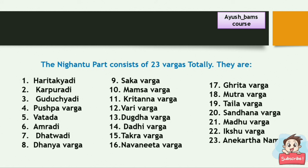The 23 Vargas of Bhavamishra Nighantu are: Haritika Adiv Varga, Kalpura Adiv Varga, Guduchya Adiv Varga, Pushpa Varga, Vata Adiv Varga, Amra Adiv Varga, Thatwa Adiv Varga, Dhanya Varga, Thakha Varga, Mamsa Varga, Kritanna Varga, Varivarga, Dudga Varga, Dadi Varga, Takra Varga, Navneeta Varga, Krita Varga, Mutra Varga, Taila Varga, Sandhana Varga, Madhu Varga, Ikshu Varga, and Anekartha Nama Varga.